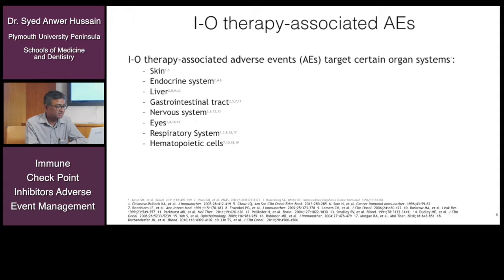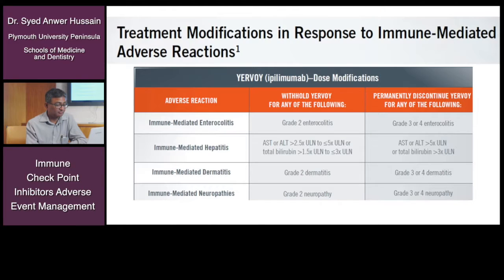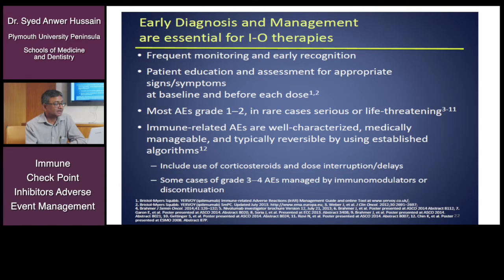The common events span the gastrointestinal tract, nervous system, eyes, respiratory system, and hematopoietic cells — including pneumonitis and rash. For gastrointestinal side effects, colonoscopy would be useful and histology will be important to give a definitive diagnosis of what is going on and to guide proper treatment. Early diagnosis and management are essential for immune checkpoint inhibitor therapies.